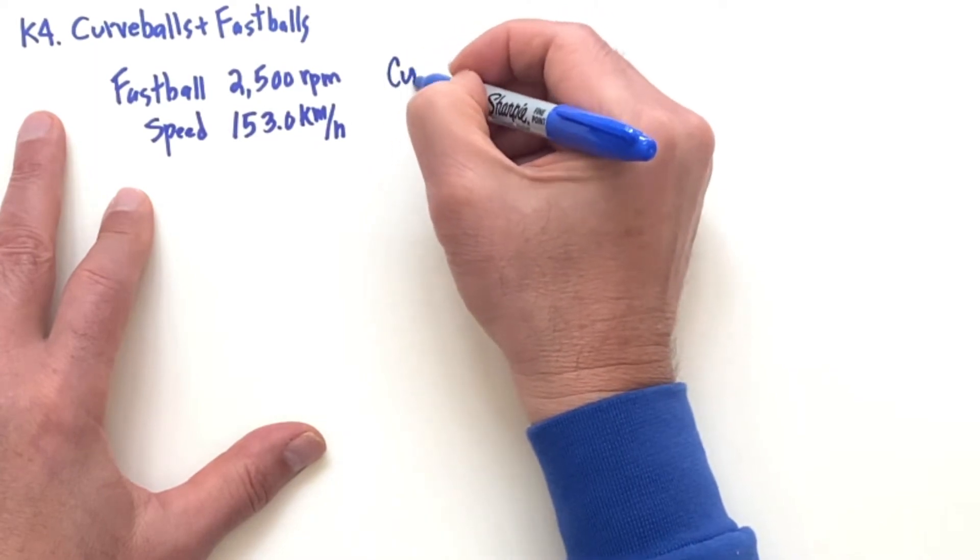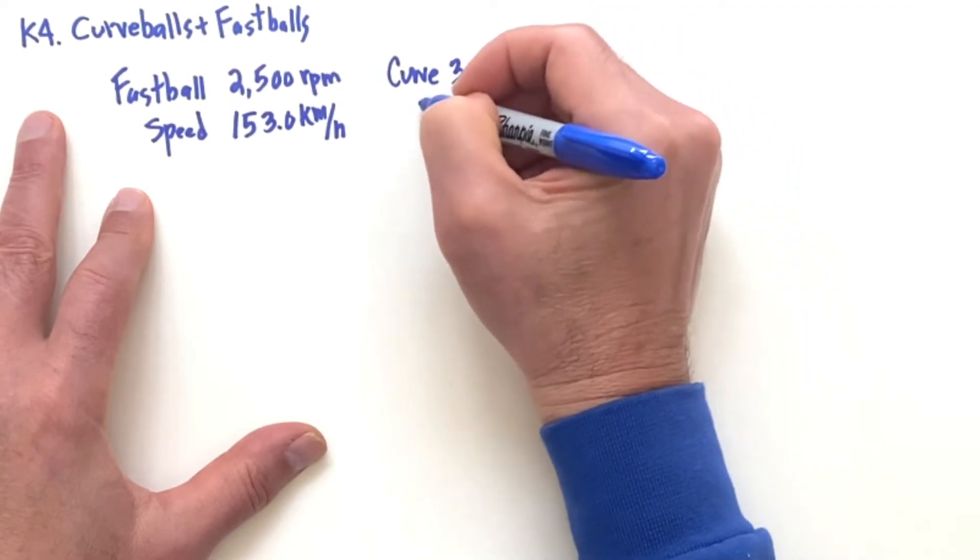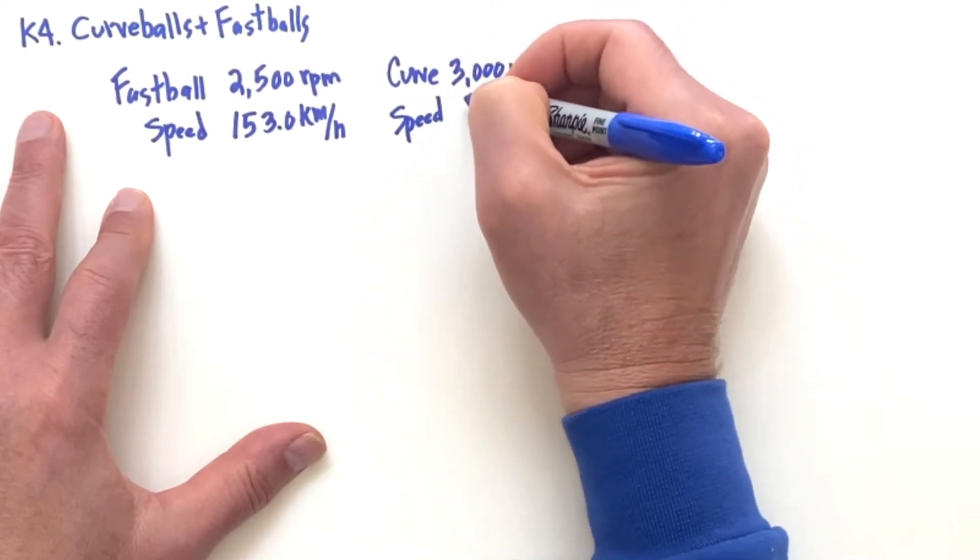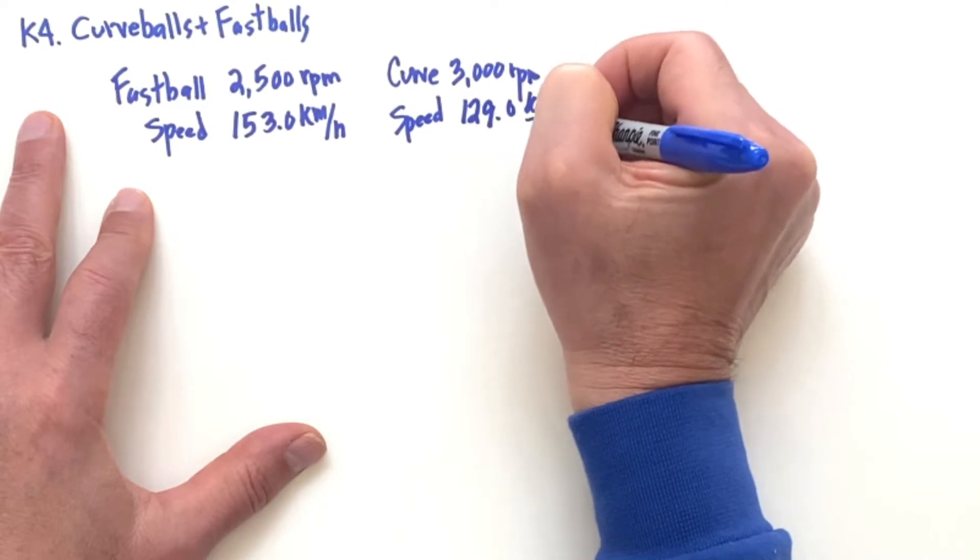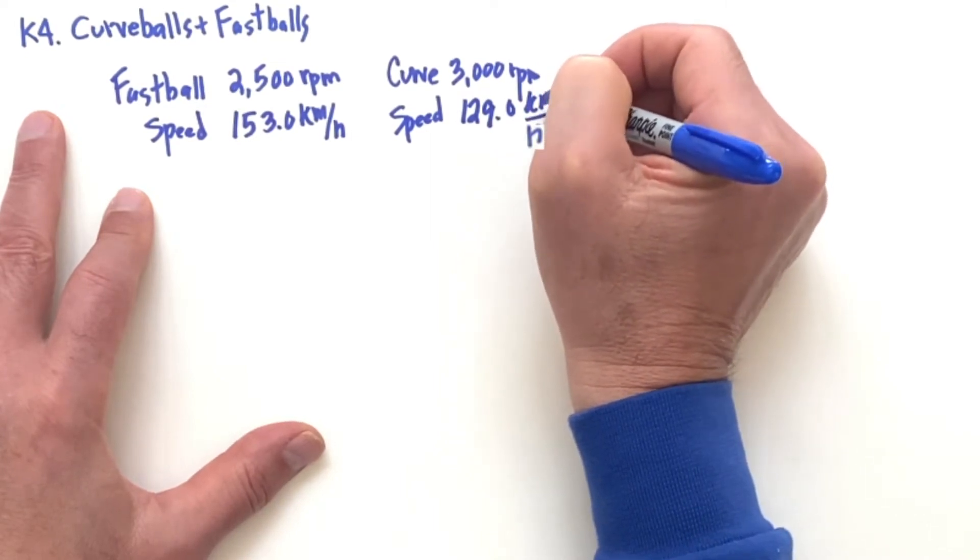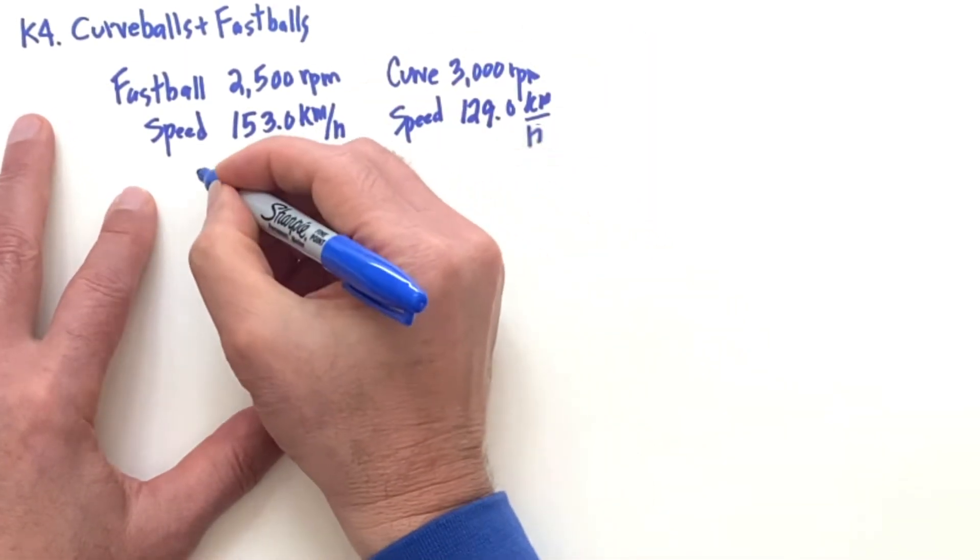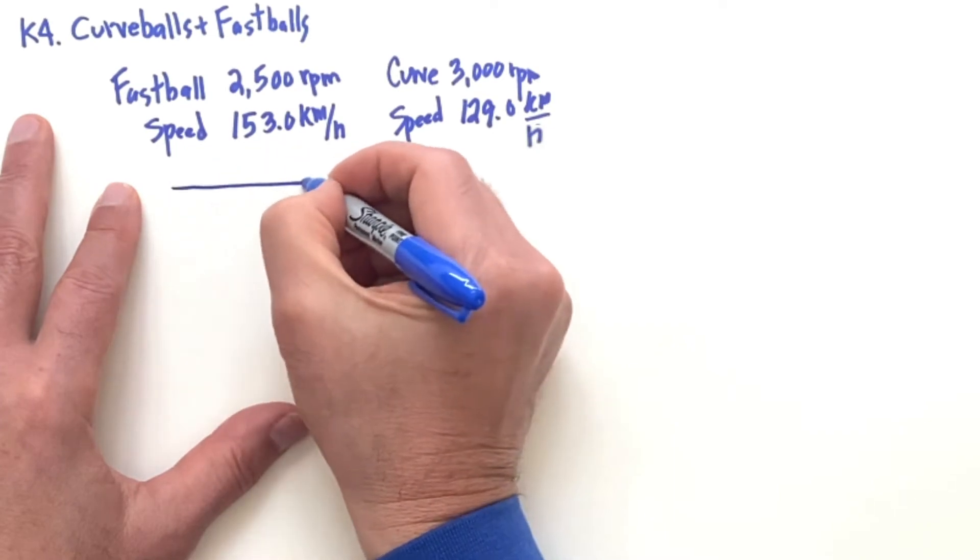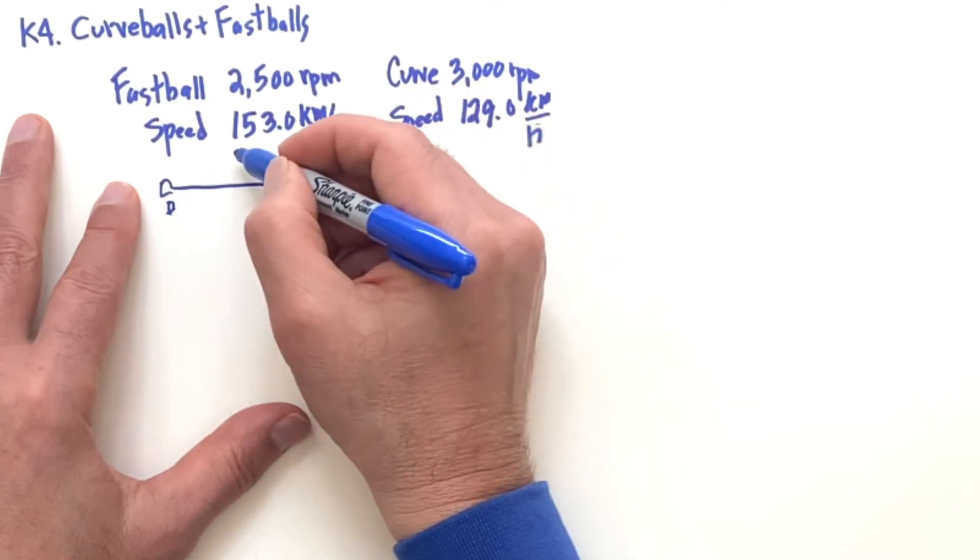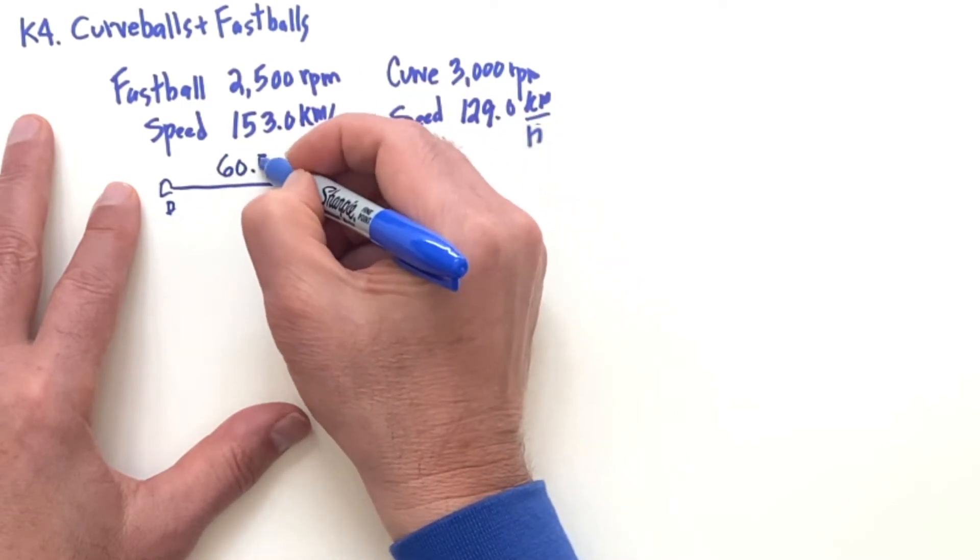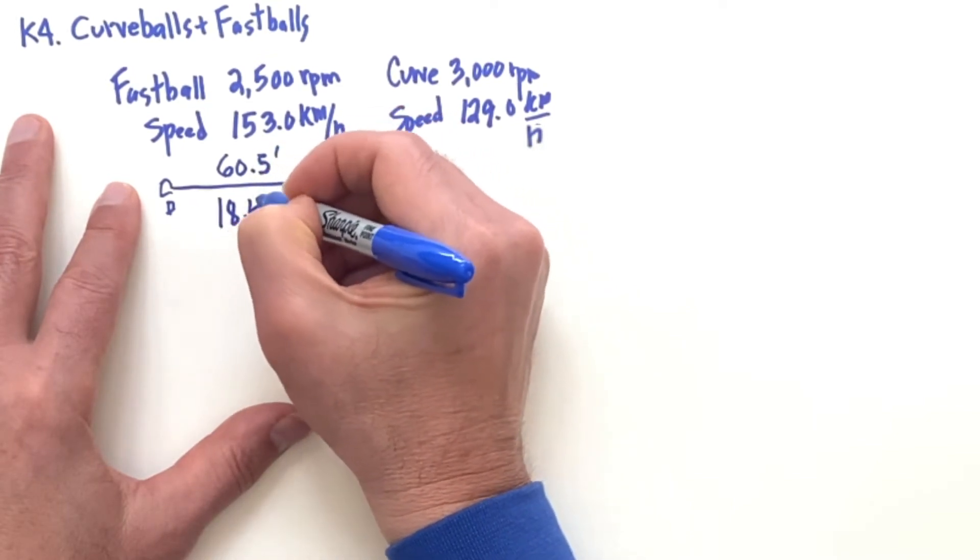And then for a curve we have 3000 RPM and for a speed 129.0 kilometers per hour, 80 miles per hour. So typical example speeds that we're using here. And we assume that the ball is thrown in a straight line by the pitcher. Say the home plate is here, and this 60.5 feet, 60 feet 6 inches, is 18.44 meters.